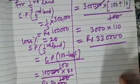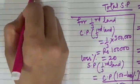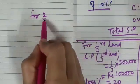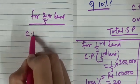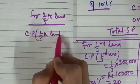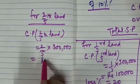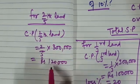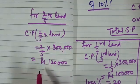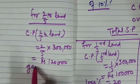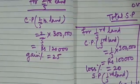Now, see what information is there for the two-fifth of land. For two-fifth of land, we will be calculating the CP first. CP will be 2 by 5 into 3 lakhs. That gives us rupees 1 lakh 20,000.